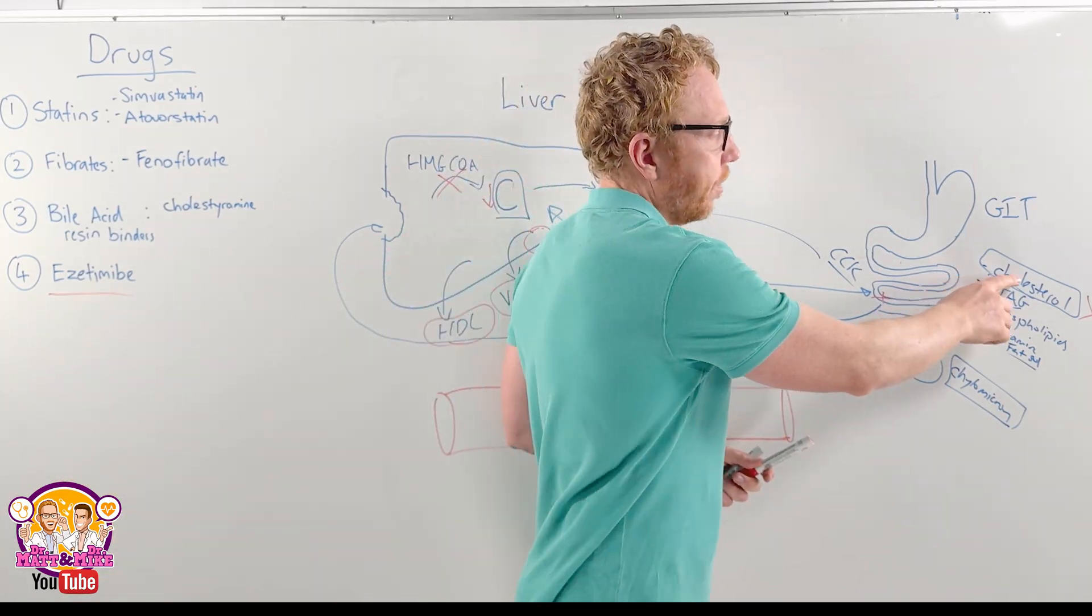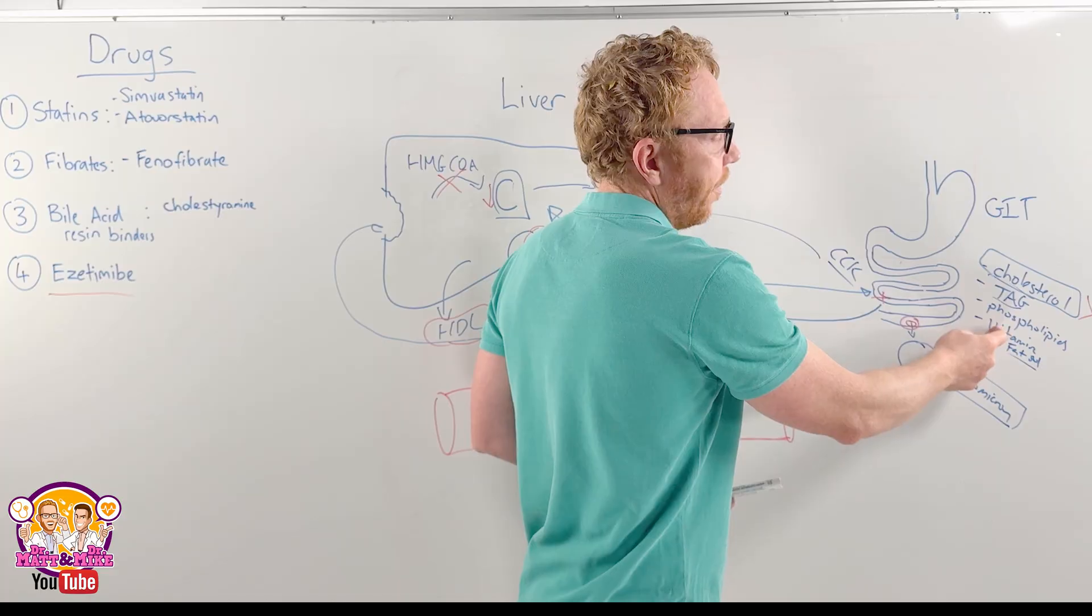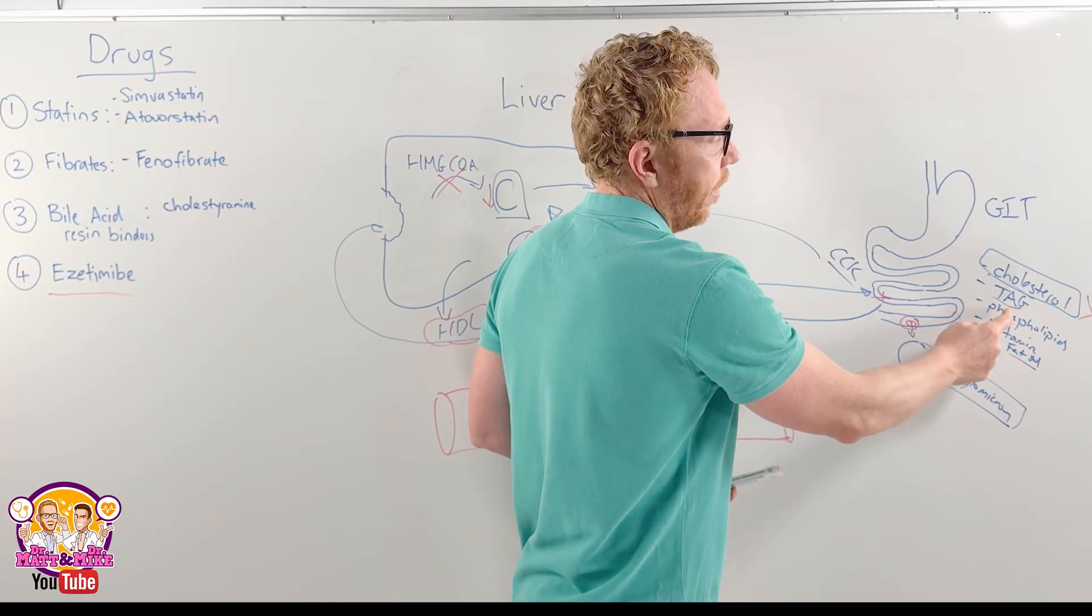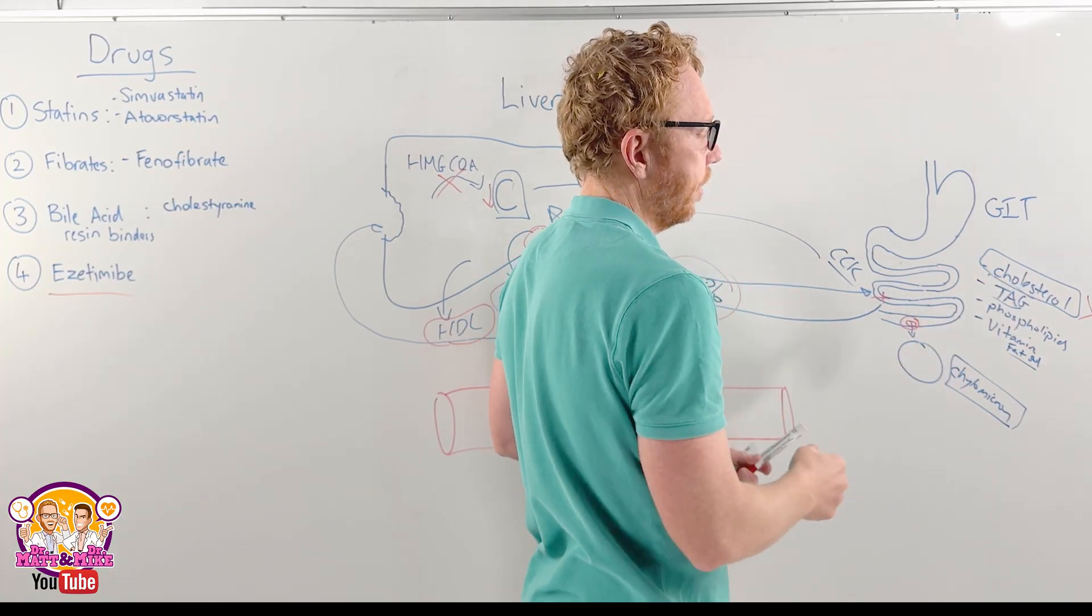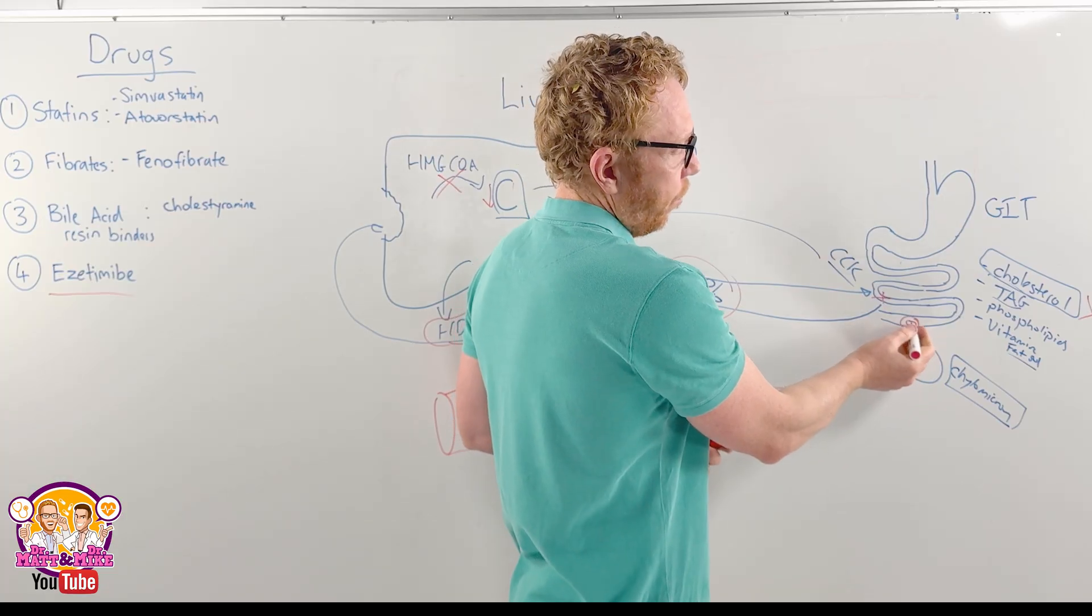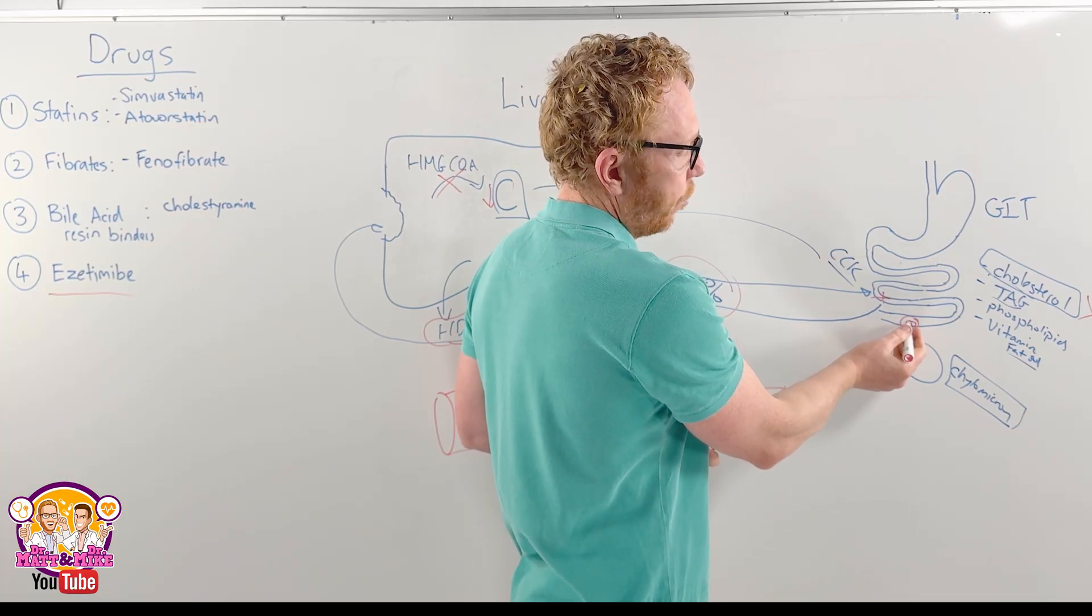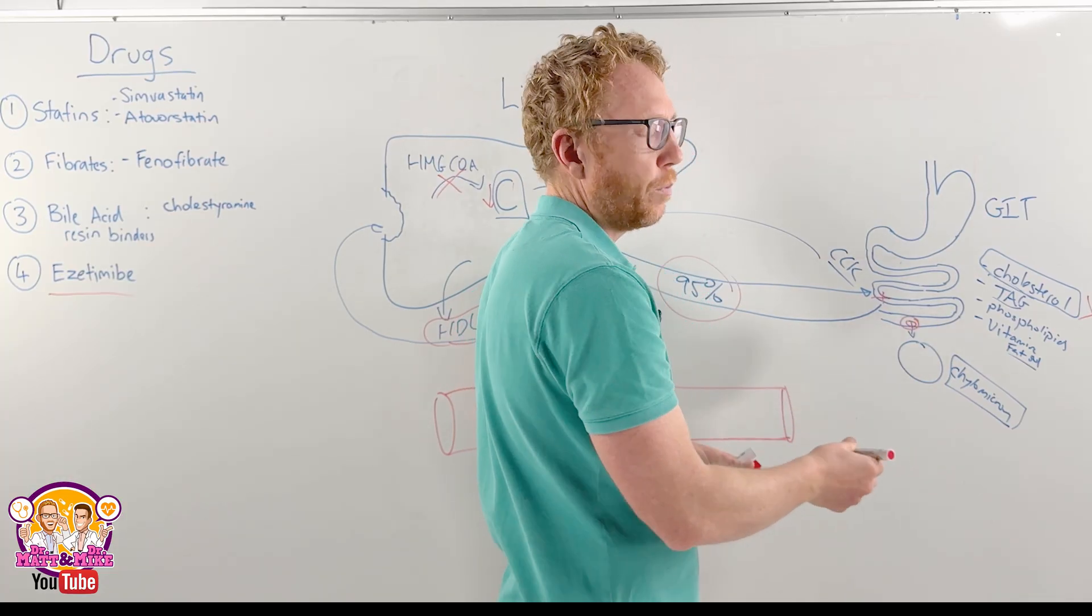ezetimibe, blocks the transporter for cholesterol only, not the other components. So these components aren't affected in the chylomicron, it's solely cholesterol. Therefore, the amount of cholesterol that can be absorbed here is less and that would be passed in stool.